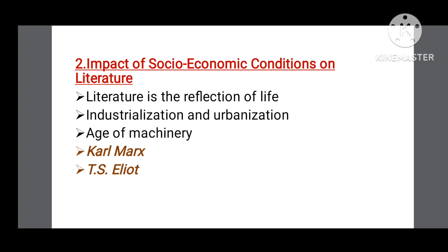These two factors — social and economic — are also reflected in the literature of that time. Because of the two World Wars, the economy was in a worse condition; many people became jobless, which resulted in urbanization. Urbanization means that people left the countryside for urban areas in search of a brighter future. The modern age also saw heavy industrialization, which is why this age is also known as the Age of Machinery. As a result of industrialization, the poor became poorer and capitalists became more powerful.